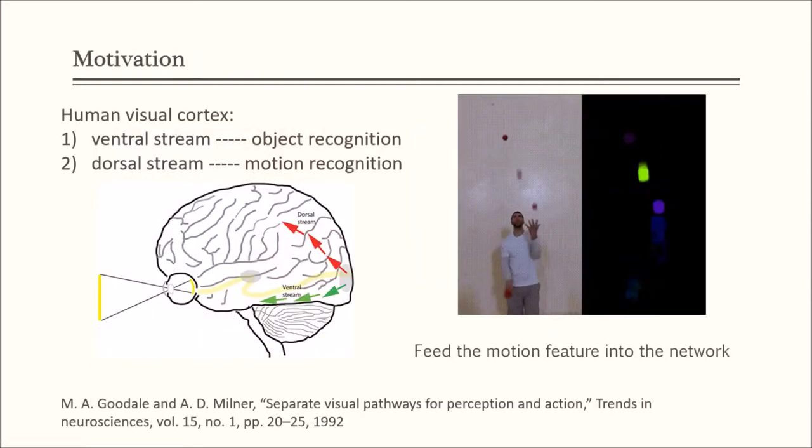In the literature of human visual perception, the human visual cortex contains two pathways: the ventral stream which performs object recognition and the dorsal stream which recognizes motion. But existing active speaker detection methods mainly obtain the visual embedding only from a stream of raw images. Therefore, we aim to advance the representative ability of the visual embedding by incorporating a motion stream.